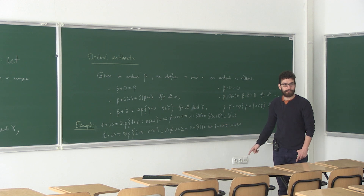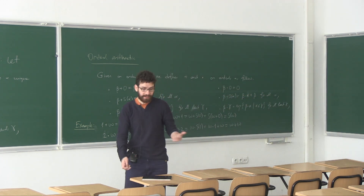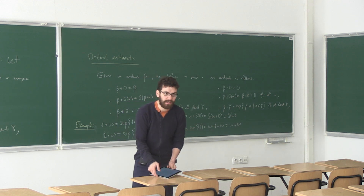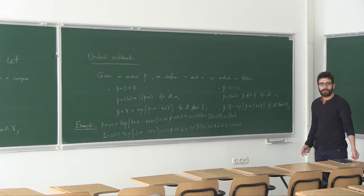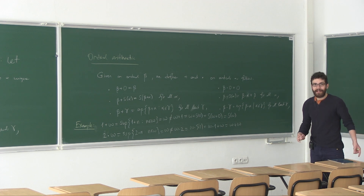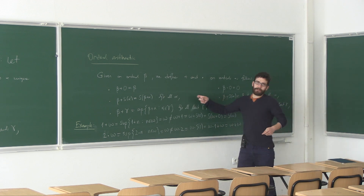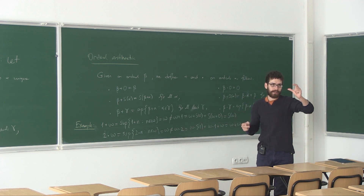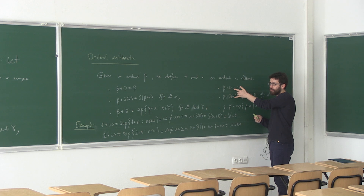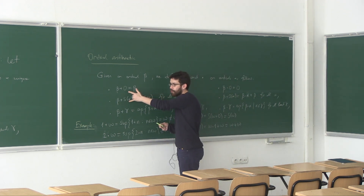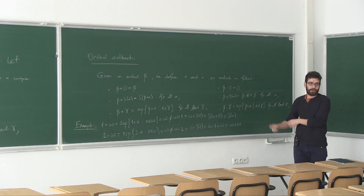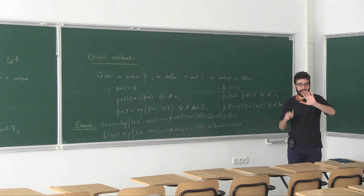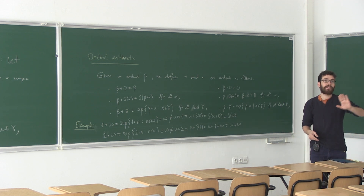By definition, it looks like these operations are not commutative — and indeed they are not. But they are associative; we are going to prove that they are associative. You can't do certain cancellations either. The definitions for addition and multiplication resemble those on natural numbers, but the actual arithmetic structure is very different — this operation is not commutative, and neither is multiplication. I'm going to list all the properties of ordinal arithmetic.